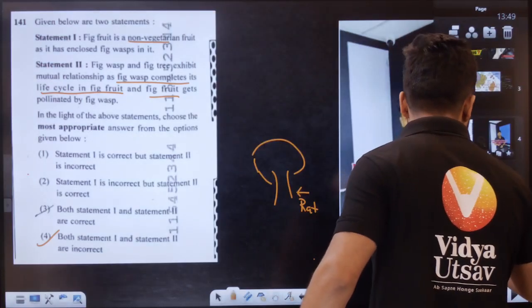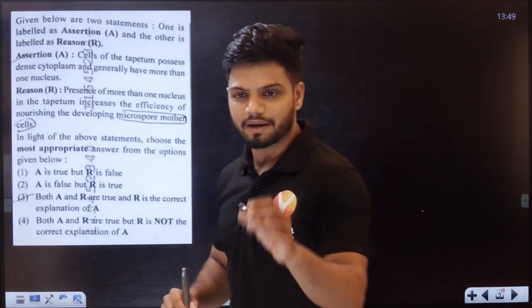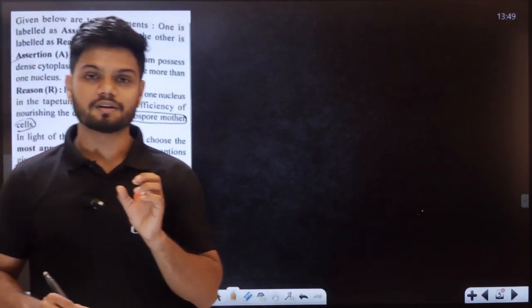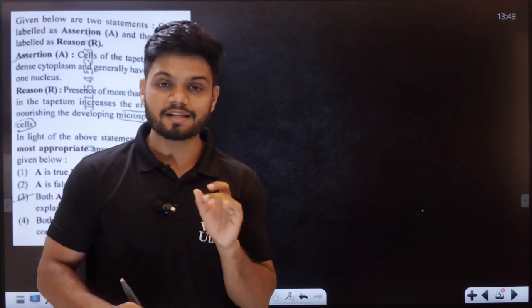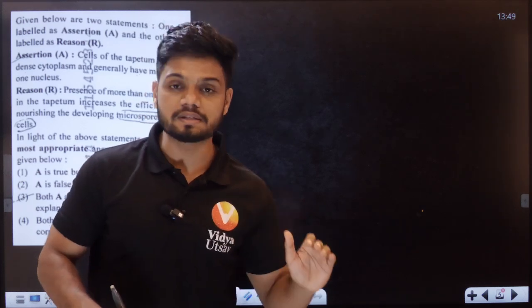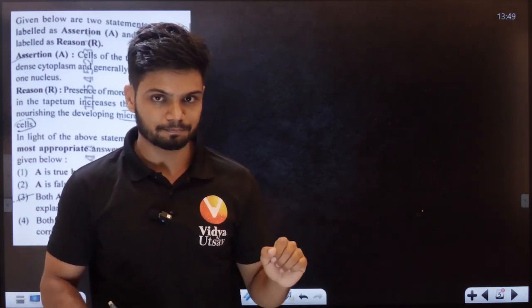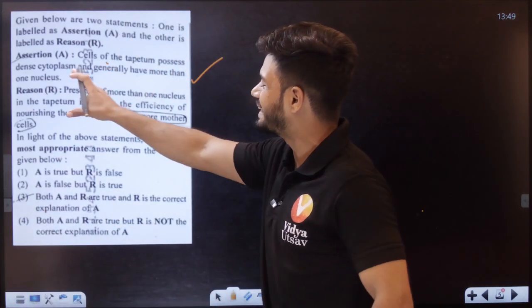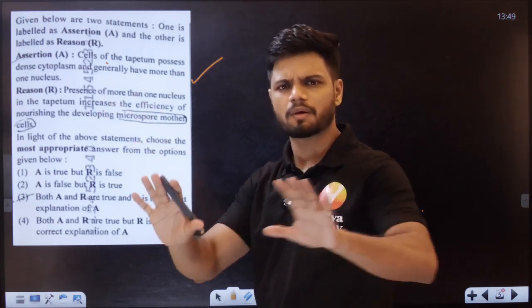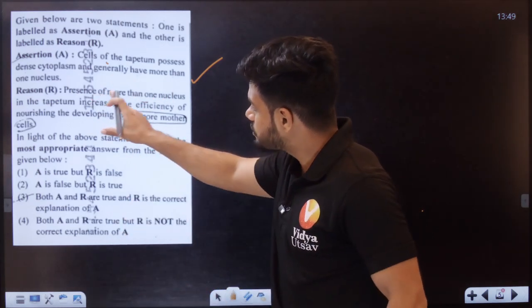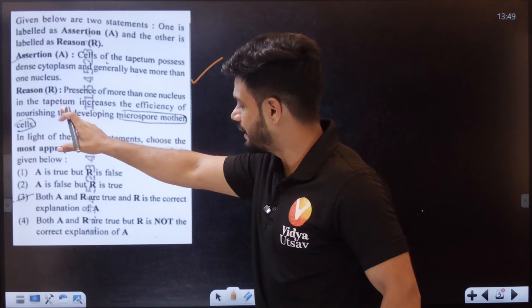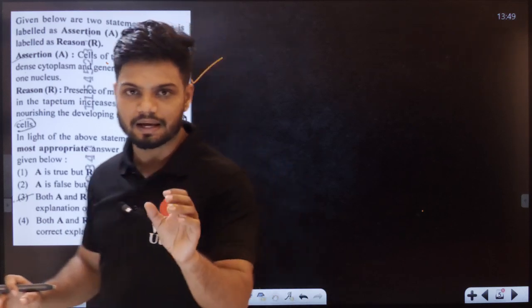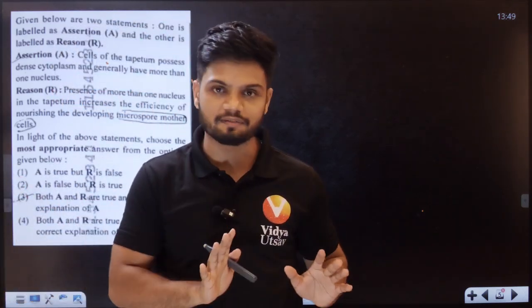Next question, students. Next question is going to be your tapetum question. Again, students, it's a fairly simple question. But here, the controversy is that it is not according to the lines of NCERT, but it is according to a concept of NCERT. What do I mean by that? See, the first statement is correct here. The cells of tapetum possess dense cytoplasm and generally have more than one nucleus. Polynuclear condition. Presence of more than one nucleus in tapetum increases the efficiency of nourishing and developing microspore mother cell.